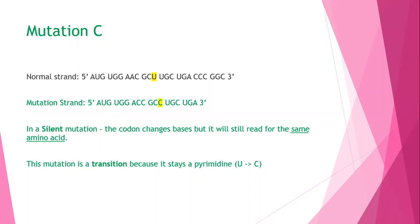This mutation is a transition. It's different from a transversion because it stayed a pyrimidine. The same thing if it had stayed a purine to a purine.